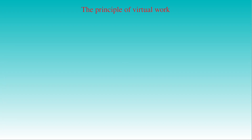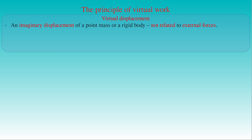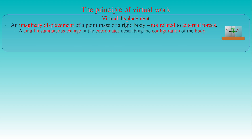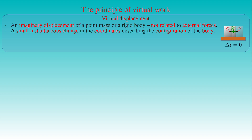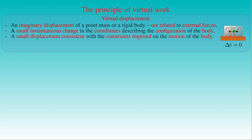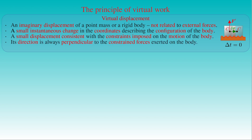From these two examples, we introduce the concept of virtual displacement with the following important properties. A virtual displacement is an imaginary displacement of a point mass or rigid body, not related to external forces. Unlike a real displacement — which requires finite time during which forces might change — a virtual displacement is a small instantaneous change in the coordinates describing the configuration of the body. It occurs without the passage of time and is defined as any small displacement consistent with the constraints on the body's motion. By definition, a virtual displacement conforms to the instantaneous constraints, and hence its direction is always perpendicular to the constrained forces.